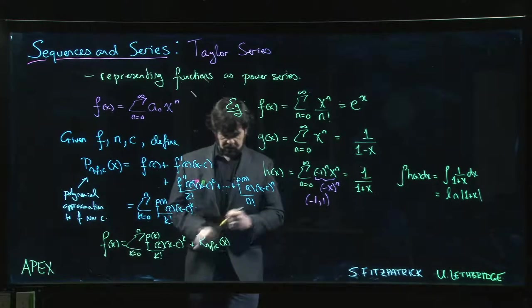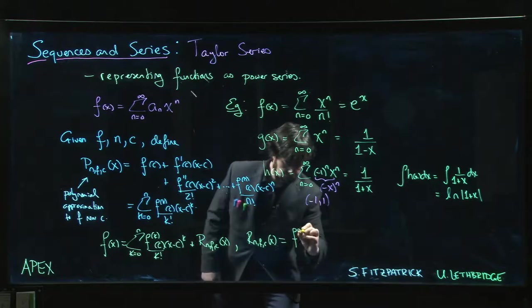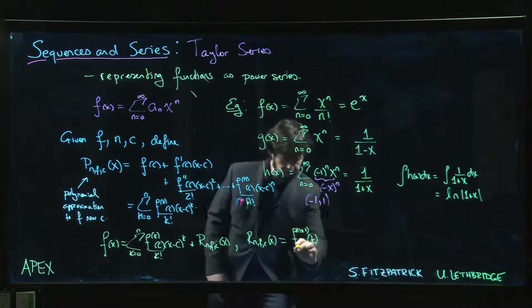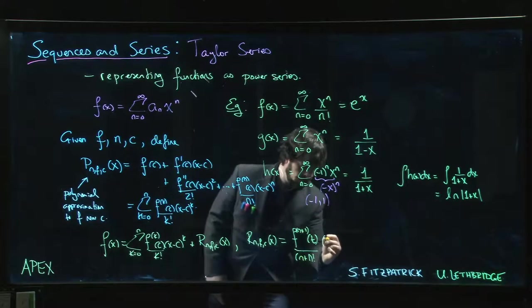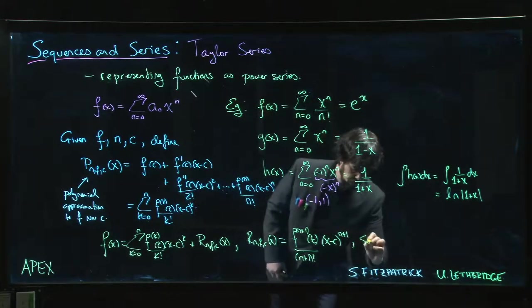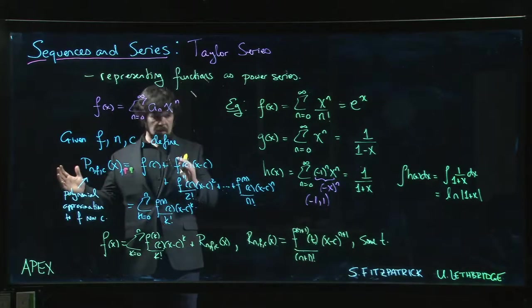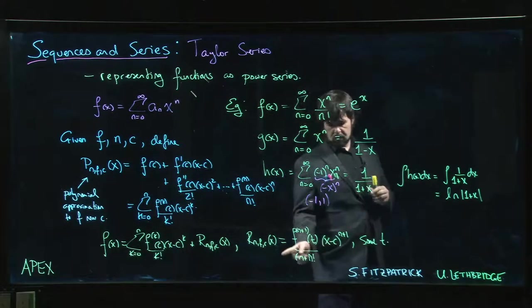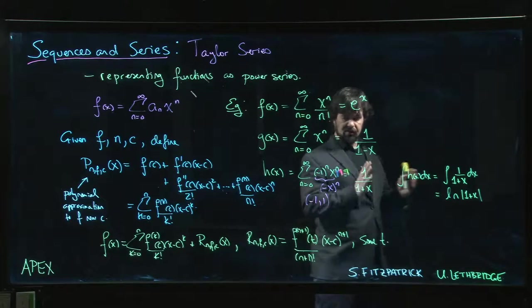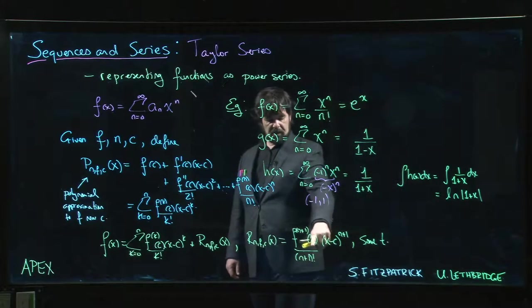There are actually a number of different formulas for this remainder, but one of the formulas is that it's the next derivative—the (n+1)st derivative of f at some value t over (n+1) factorial, and then (x - c) to the (n+1), for some number t. All you can really say about that number t is that it's somewhere between—basically it's going to be somewhere between c and x. It depends on whether x is bigger or smaller than c. It depends on x. This number t is always between x and c.